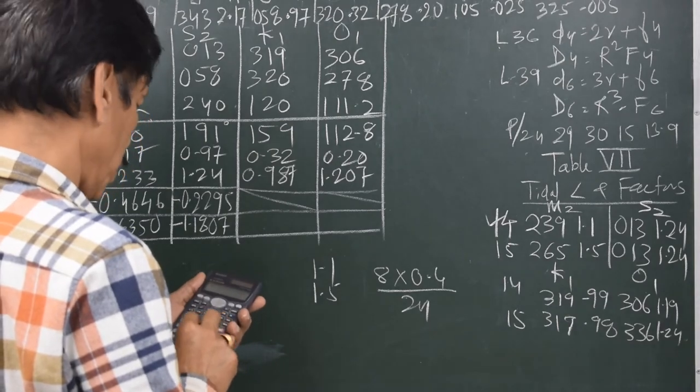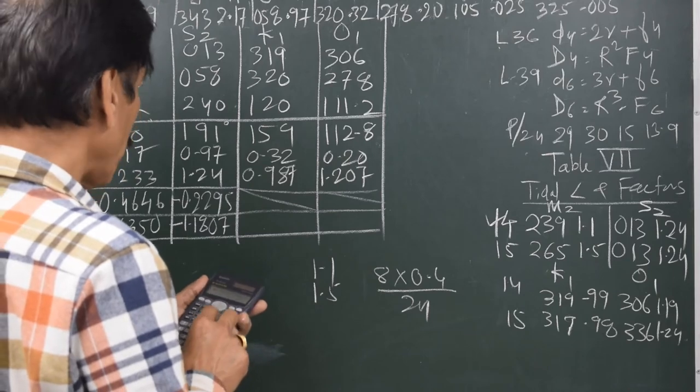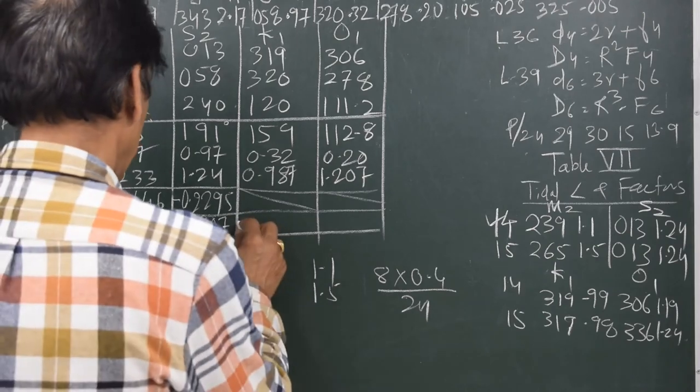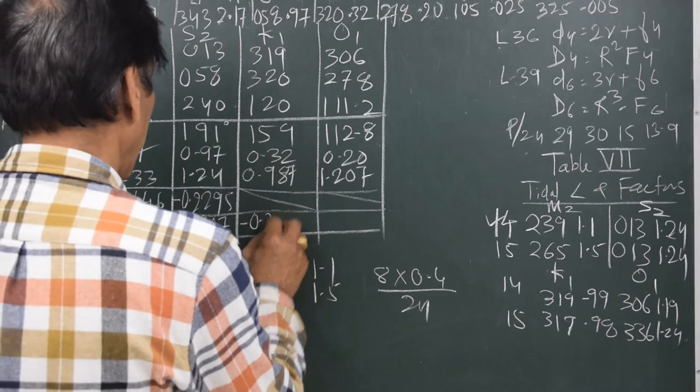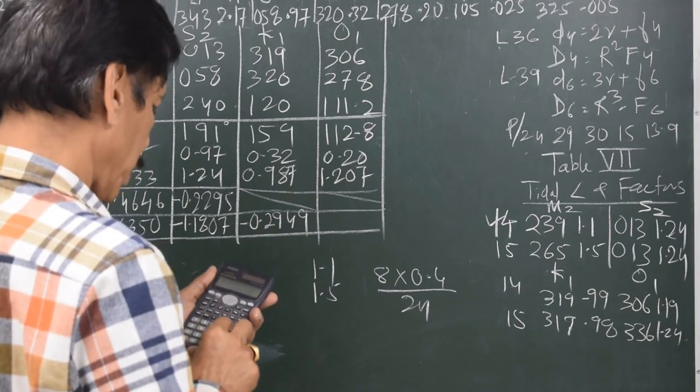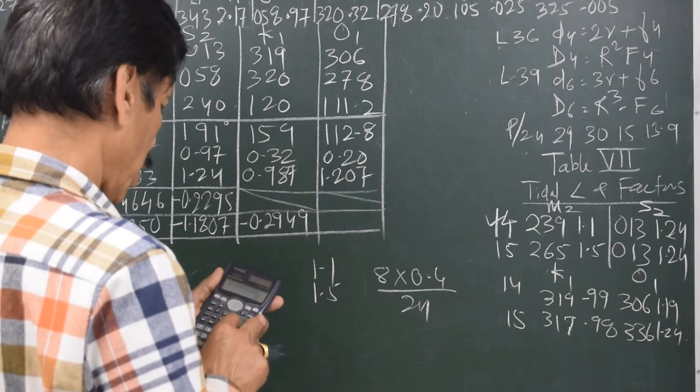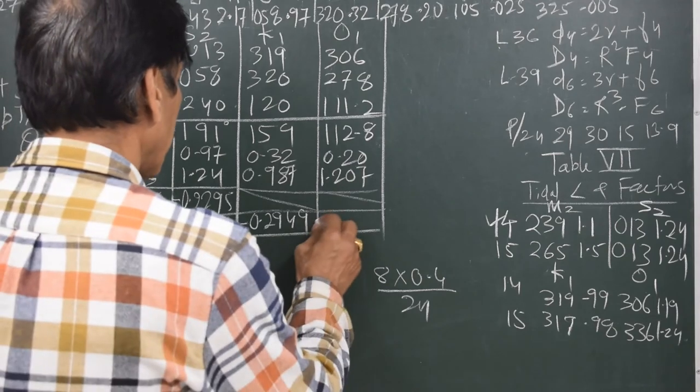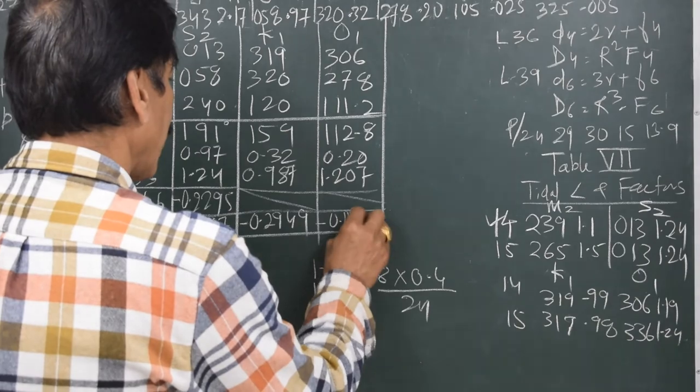Next is 0.32 into 0.987 into cos of 159 degrees. That is minus 0.2949. Then 0.2 into 1.207 into cos of 112.8 degrees. That is minus 0.0935.